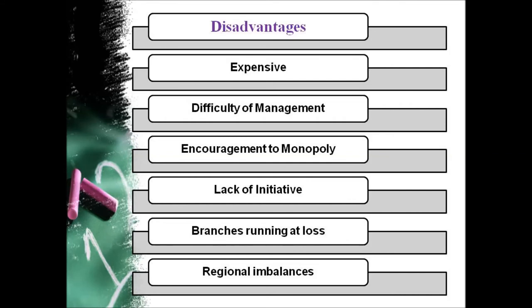Branch banking encourages monopolistic tendencies. In this banking system, a few big banks dominate and control the whole banking system of the country through their branches. This can lead to concentration of resources in the hands of a small number of persons — a source of danger to a community aiming at a socialistic pattern of society. Under branch banking, regional imbalances can also be seen. Financial resources collected in smaller and backward regions are transferred to bigger industrial centers, encouraging regional imbalance.